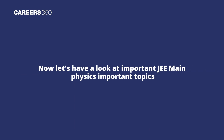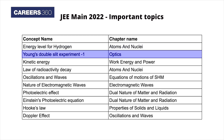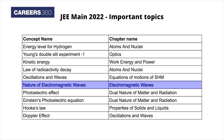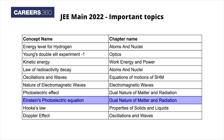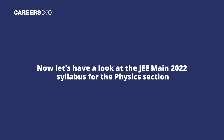Now let's have a look at the important JEE Main physics topics: energy levels of hydrogen, Young's double slit experiment, kinetic energy, law of radioactivity decay, oscillations and waves, nature of electromagnetic waves, photoelectric effect, Einstein's photoelectric equation, Hooke's law, and Doppler's effect. Now let's have a look at the JEE Main 2022 syllabus for the physics section.